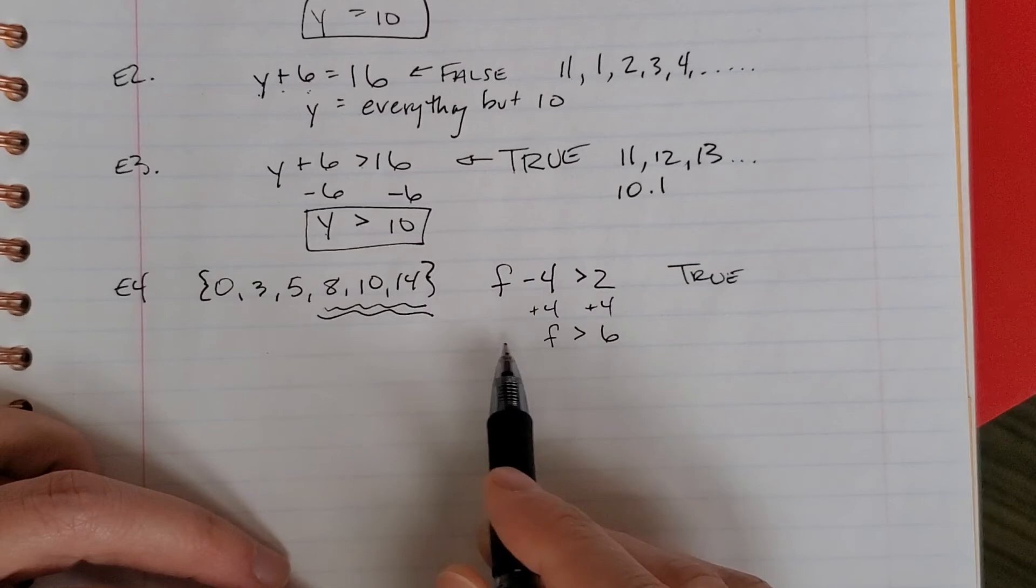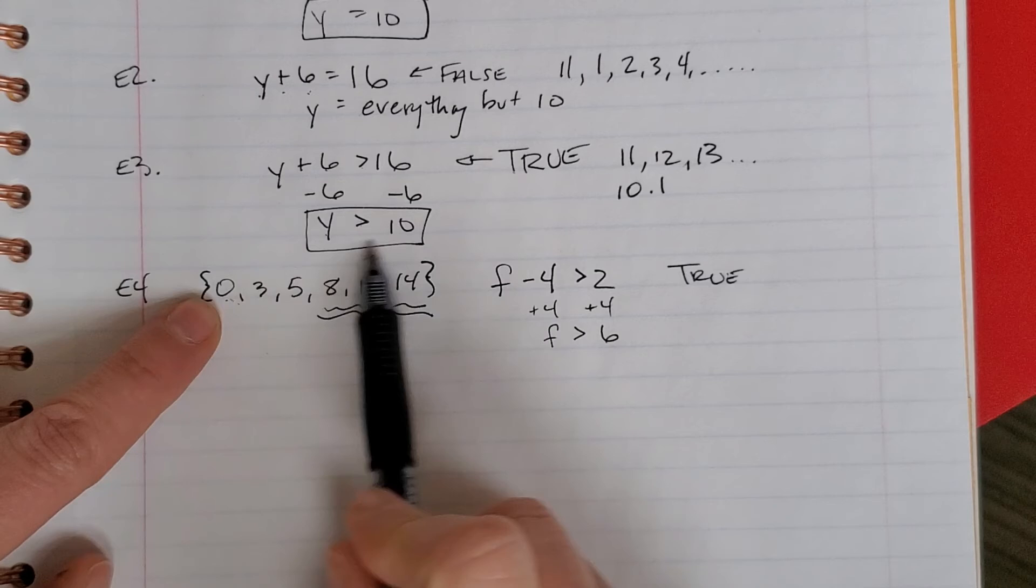Or if that way still confuses you, which I hope it doesn't, but if that way does, substitute the value of the variable. Put a 0 in for the f.